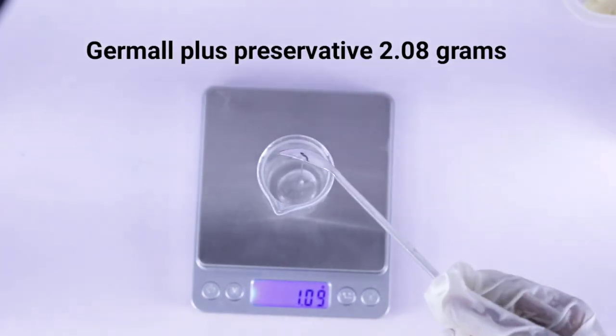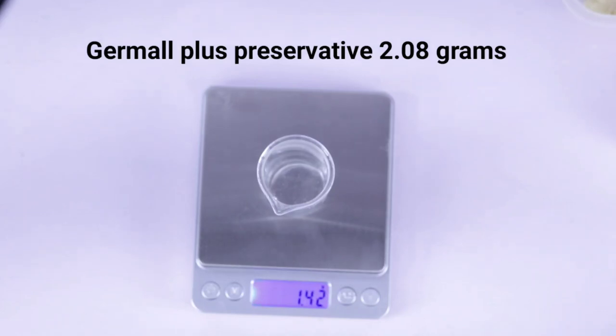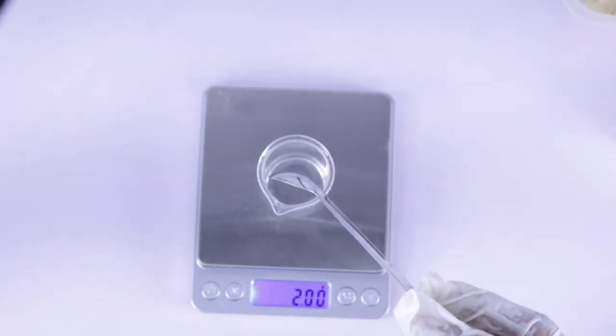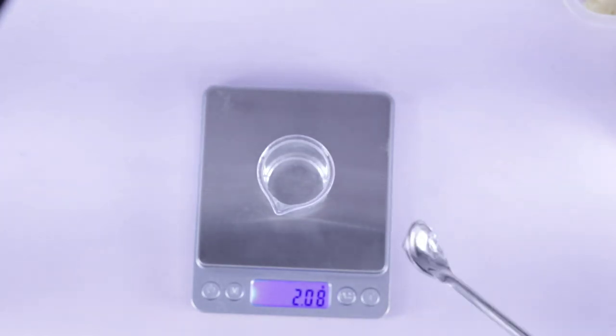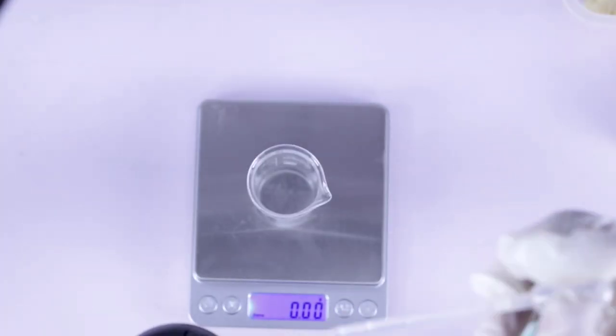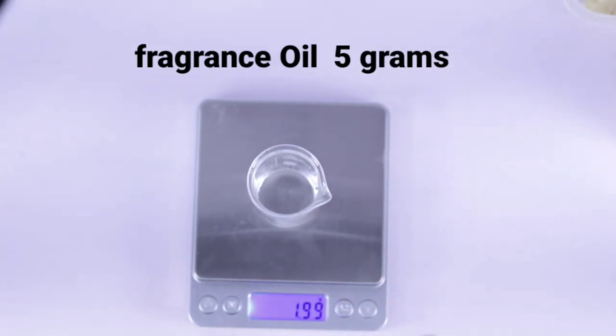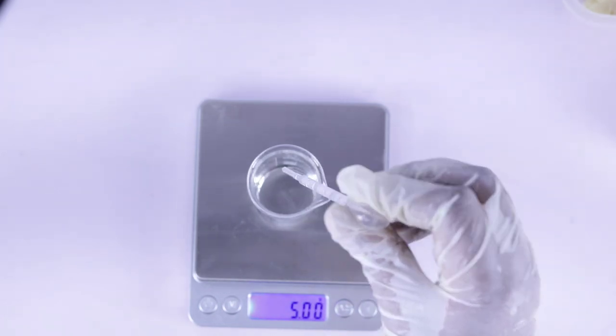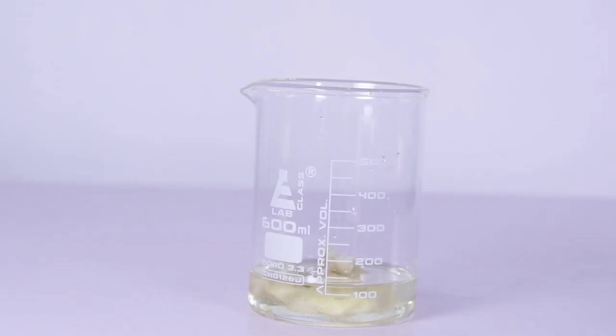We are going to use Germall Plus preservative, 2.08 grams. It's a must to use preservatives to preserve your lotion, otherwise you can't keep your lotion for long, maybe one week, and even then it has to be in the fridge. We need fragrance. I'm going to use 5 grams. You can choose to use essential oil of your choice. These are the few ingredients that we are going to use.